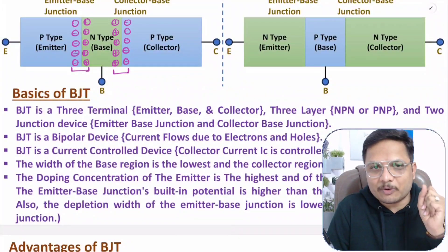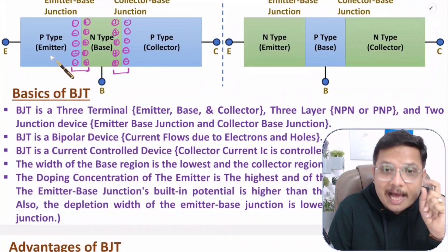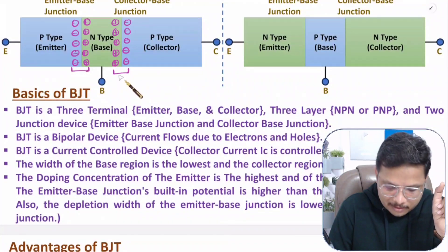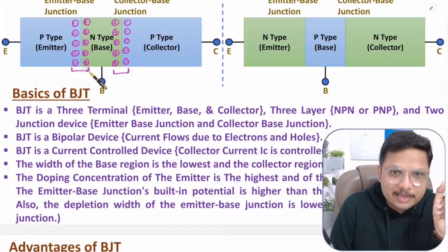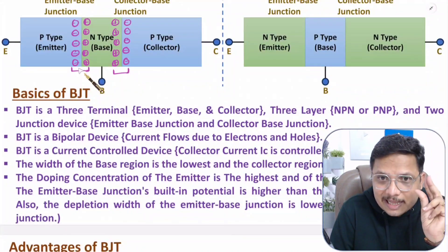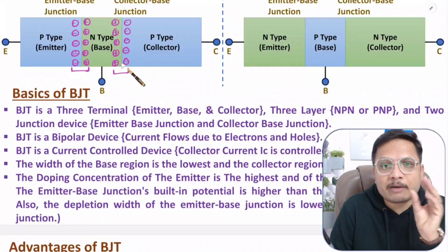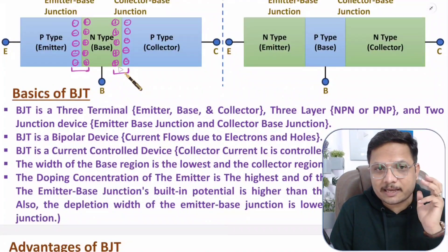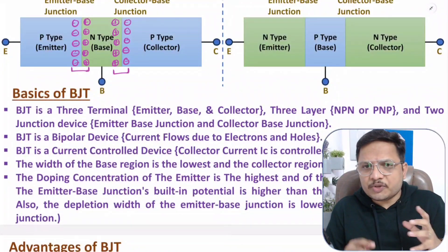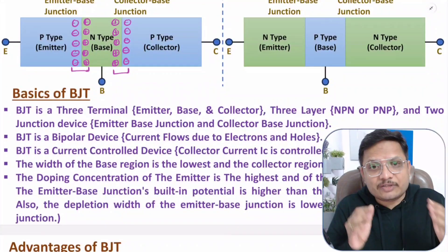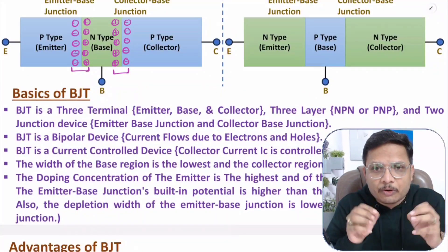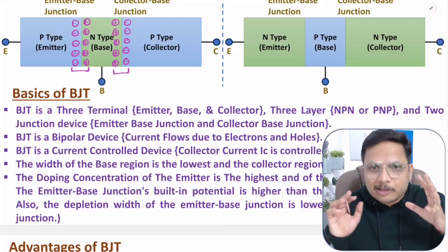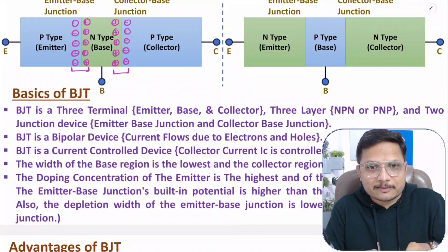Since the emitter is highly doped, the depletion region width at the emitter-base junction is less, but the potential is higher there. At the collector-base junction, the potential is lower but the width is more. These are the basics you should understand based on the construction of BJT — knowing how it is operating and in which mode — before you study BJT further.